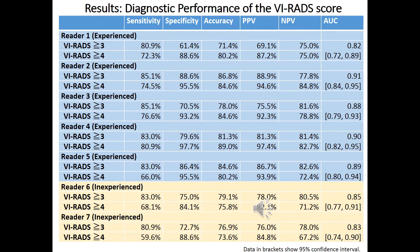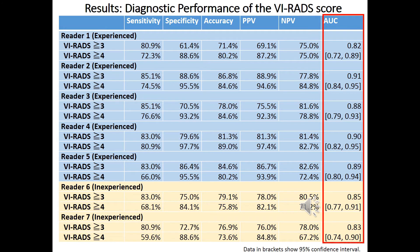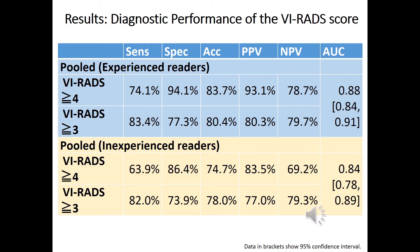Diagnostic performance of the VRATS score is shown here. VRATS demonstrated AUC greater than 0.80 for both experienced and inexperienced readers, indicating that VRATS achieves good diagnostic performance even with inexperienced readers. The pooled AUC of experienced readers was better than that of inexperienced readers. Using a score of 4 or greater as the cutoff value, the pooled specificity and PPV were 94.1% and 93.1%, respectively.